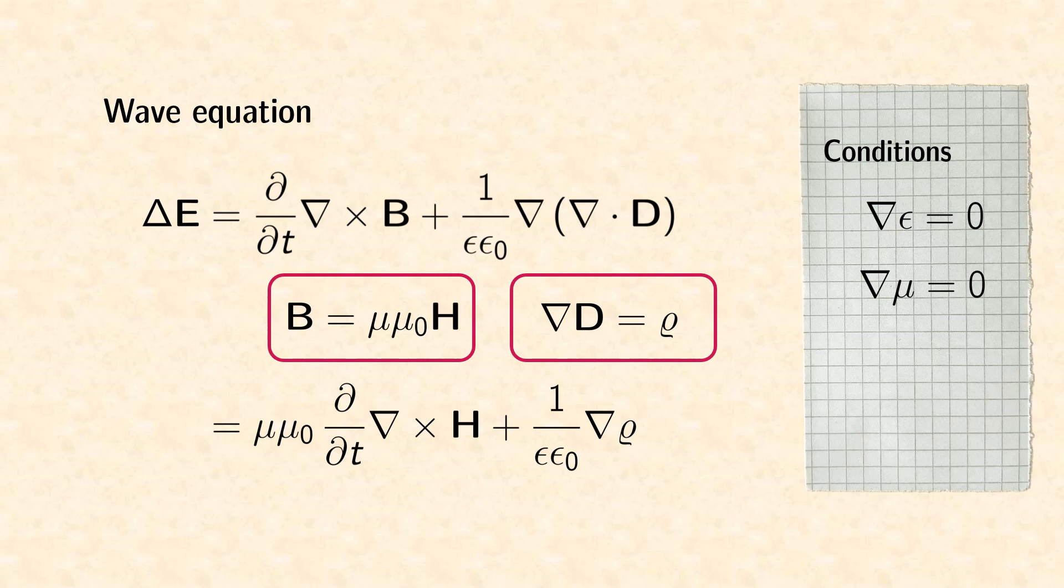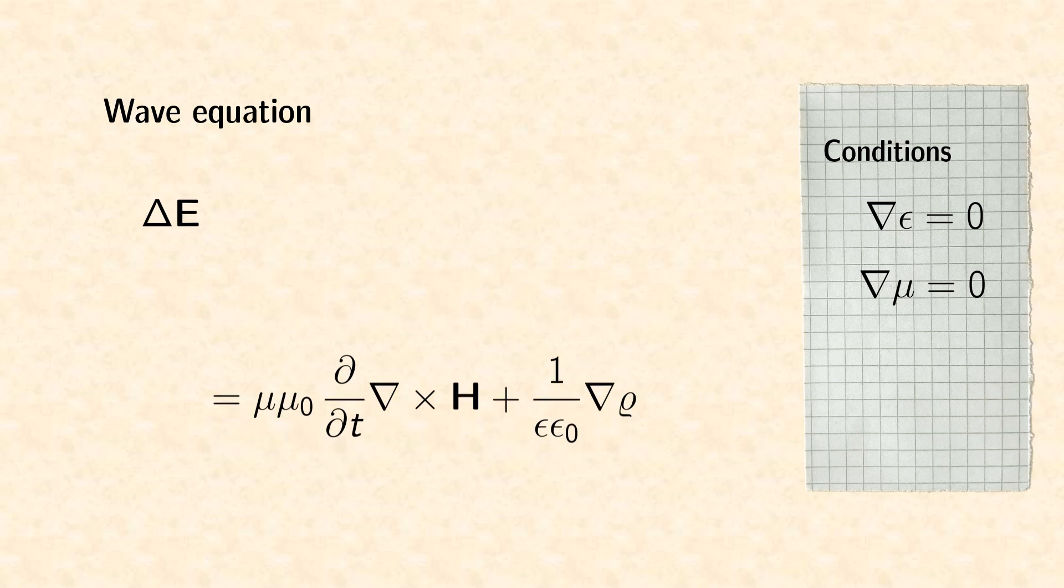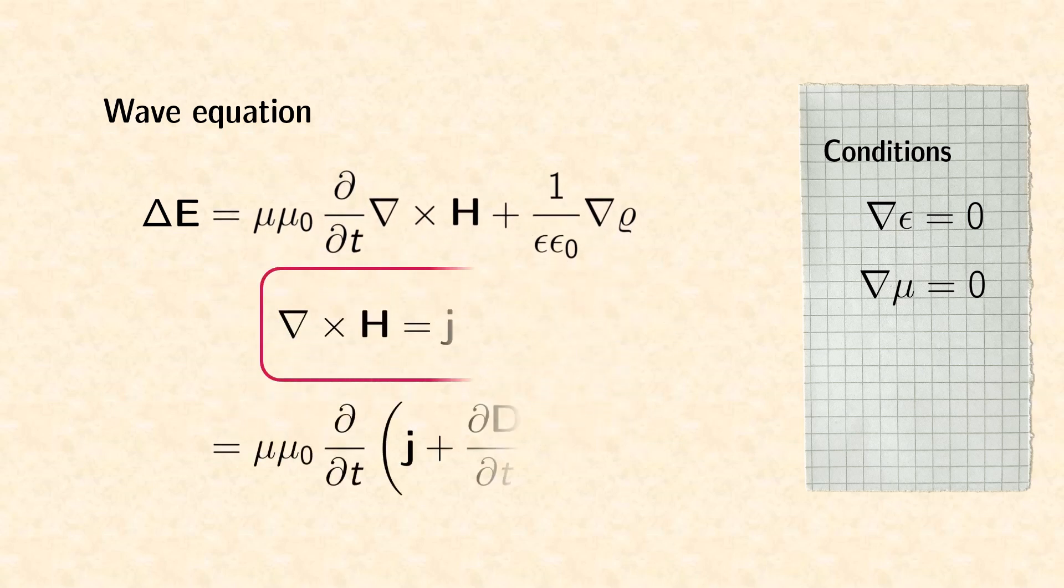Now we come back to the first term, in which we replace the curl by Maxwell's fourth equation. The second term vanishes when we assume that the gradient of the charge density is equal to zero.